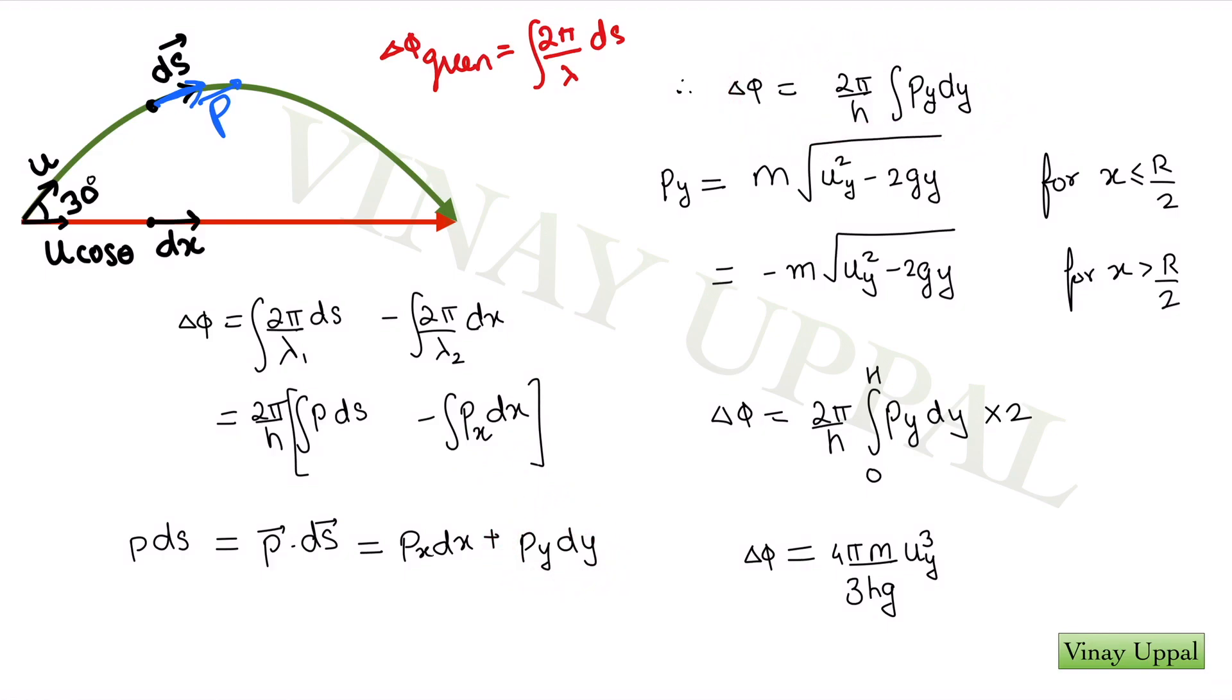That is what I have written here. The change in phase, the difference in phase rather, is only 2π/h times integral py dy. This is the only integral that we need to evaluate. Now, it is just a bit of mathematics which is quite straightforward. The way to write py, I can simply write py as m times vy and I can write vy using kinematics as √(uy² - 2gy) where uy is the y component of the initial velocity for the green beam.